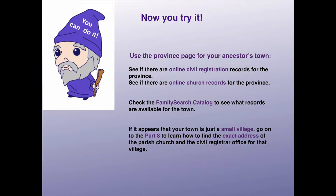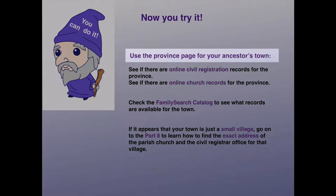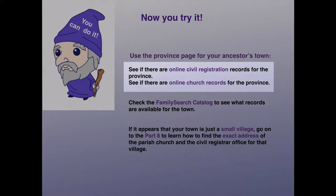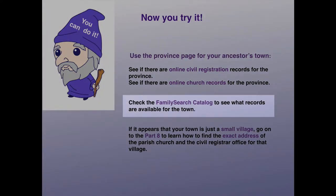Now you try it. Use the province page for your ancestor's town. Check to see what records are online, both for civil registration and for church records — you can begin searching those immediately. Check the FamilySearch catalog, and remember that records currently only available in microfilm form will gradually be digitized.